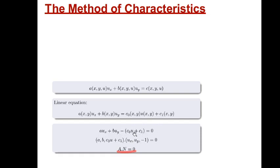We can write this as an inner product of two vectors: the first vector is (A, B, C0(x,y) u + C1) and the second is (u_x, u_y, -1). If we denote the first vector by A and the second by N, we see that A dot N equals 0, meaning the two vectors are perpendicular. Now N, which is (u_x, u_y, -1), is nothing but the normal to the surface — the gradient of f. So the vector A must lie in the tangent plane.